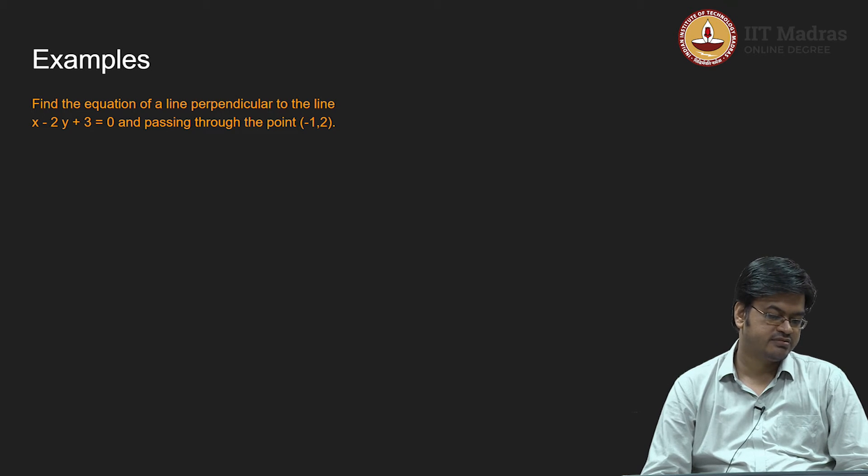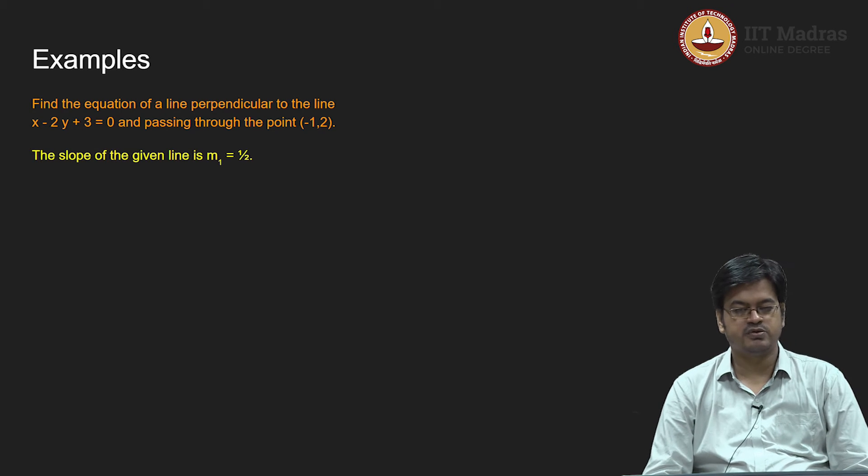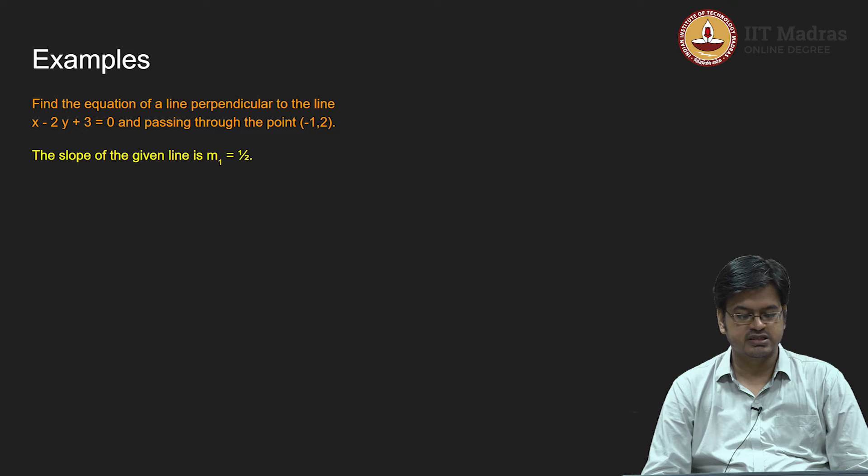Therefore, the slope of the given line will be minus a by b, which is minus 1 upon minus 2, that will be half. So the slope of the given line m1 is equal to half.